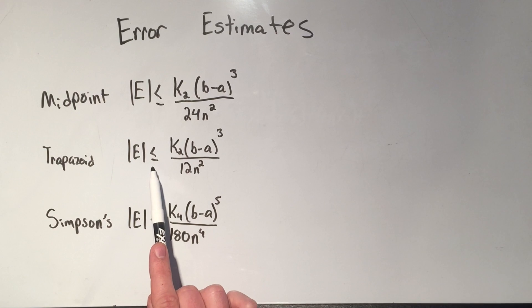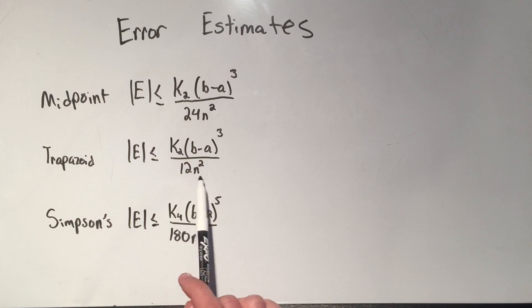Trapezoid rule, very similar, the error is less than k₂, b minus a cubed, over 12n². And Simpson's is a little bit trickier. The error is less than or equal to k₄, so that's the maximum value of the fourth derivative of your function, times b minus a to the fifth, over 180n to the fourth.